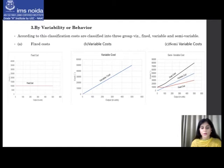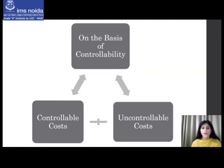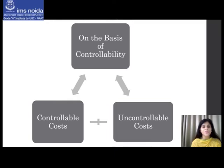Next, classification by controllability: costs may be classified as controllable or uncontrollable. Controllable costs are those which can be controlled, typically by a cost, profit, or investment center manager. Direct costs comprising direct labor, direct material, and direct expenses, along with some overheads, are generally controllable by shop-level management. Uncontrollable costs are those which cannot be influenced by the action of a specified member of an undertaking — for example, the share of tool room expenditure apportioned to a machine shop is not controllable by the machine shop foreman.